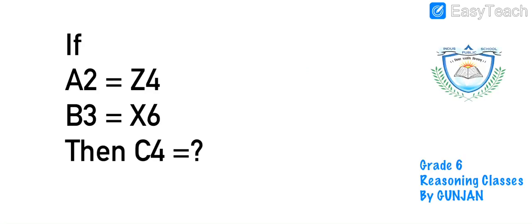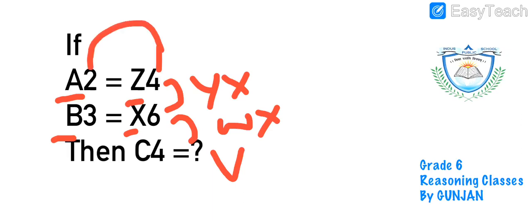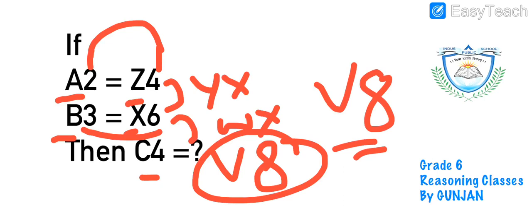Let's try this question: a2 = z4, b3 = x6, then c4 = ? The first alphabet equals the last alphabet — a equals z. B equals x, so c will equal v (skipping w, as y was skipped). For numbers: 2 doubled is 4, 3 doubled is 6, so 4 doubled is 8. The answer is v8.